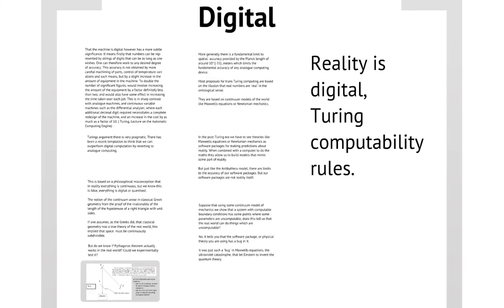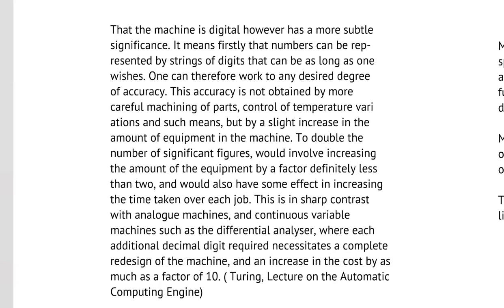So, let's look at the digital aspect. I'm quoting Turing now. The machine is digital, however, that the machine is digital has a more subtle significance. It means firstly that numbers can be represented by strings of digits that can be as long as one wishes. One can therefore work to any desired degree of accuracy. This accuracy is not obtained by more careful machining of parts, control of temperature variations and such means, but by a slight increase in the amount of equipment in the machine. To double the number of significant figures would involve increasing the amount of equipment by a factor definitely less than two, and would also have some effect in increasing the time to take each job.